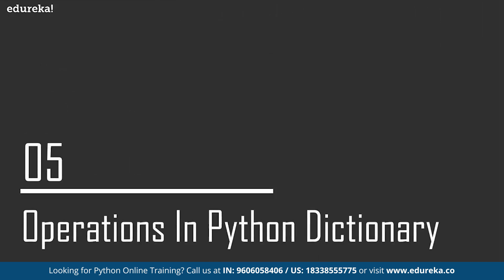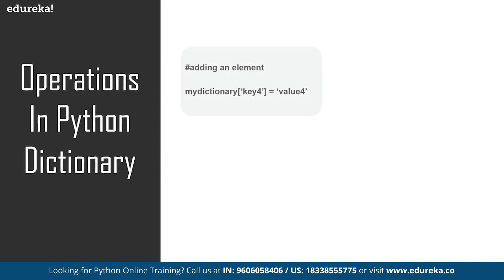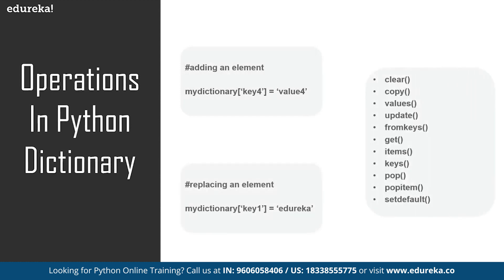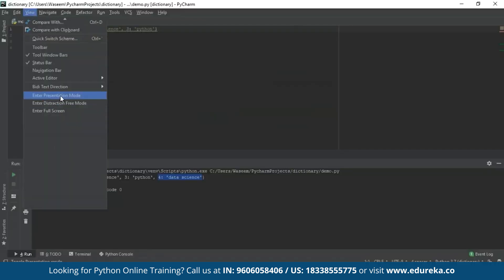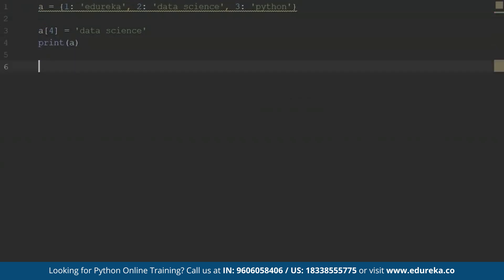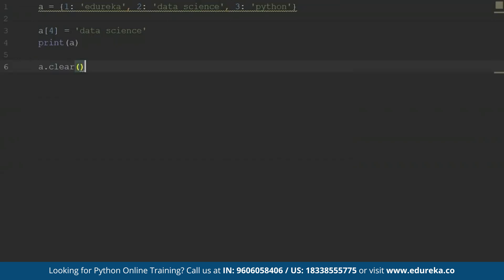Now that we have understood how we can implement a dictionary in Python, let's take a look at the operations available. I have already shown how to add an element and replace an element. Let's go to PyCharm and look at these operations one by one. We'll enter presentation mode. We have a dictionary here. First, let's talk about clear. When I use clear, it is going to remove all the elements from the dictionary. When I run this and print the dictionary, it is empty because clear has removed all elements.